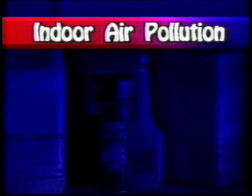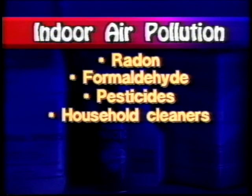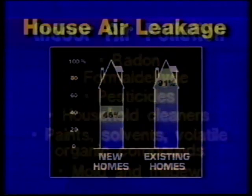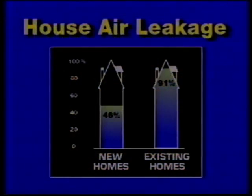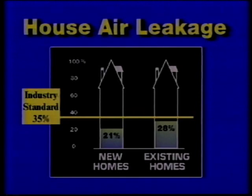Houses need to breathe because there are many sources of indoor air pollution: radon from the soil, formaldehyde from building materials, pesticides, household cleaners, paints, solvents, volatile organic compounds, and mold and mildew. When duct leaks are repaired, house ventilation rates decrease dramatically, sometimes by a factor of five or more, and indoor air quality may worsen. In a majority of new and existing homes, air exchange after repair falls below the industry minimum standard of 35% of house air per hour. It may therefore be necessary to install a mechanical ventilation system to achieve good air quality.